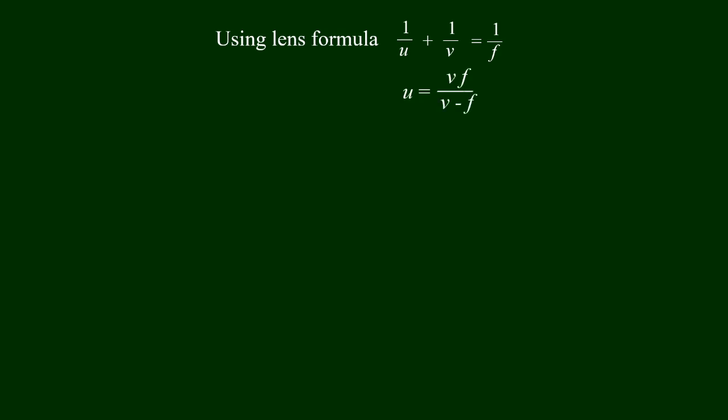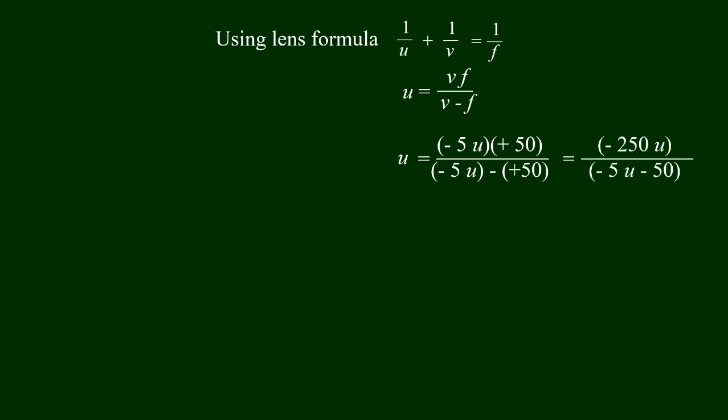Solving further, u is equal to minus 50 divided by minus 50 minus plus 50. There are two values: x equals minus 50 minus 250, and the solution minus 50 gives u.